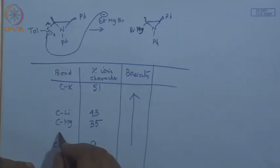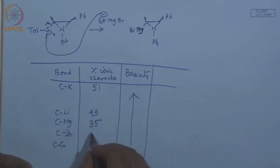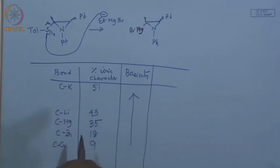Where does organozinc fit? Below magnesium. The value for organozinc is about 18% ionic character. There is a dramatic difference between organomagnesium and organozinc — organozinc is less reactive. That is why organozinc compounds do not react with esters, and that is the origin of the Reformatsky reaction.